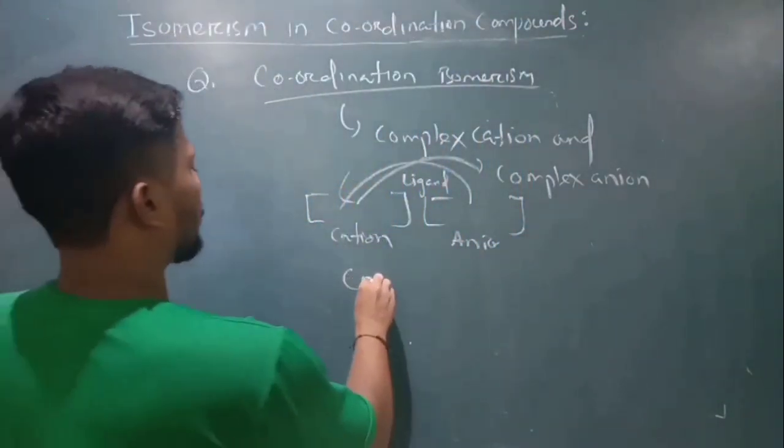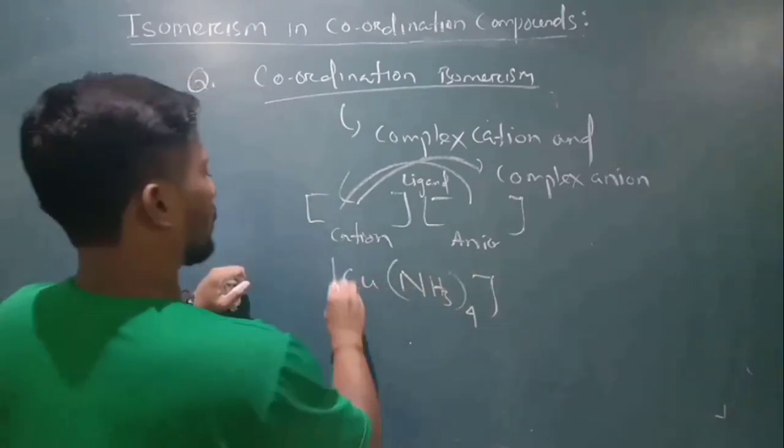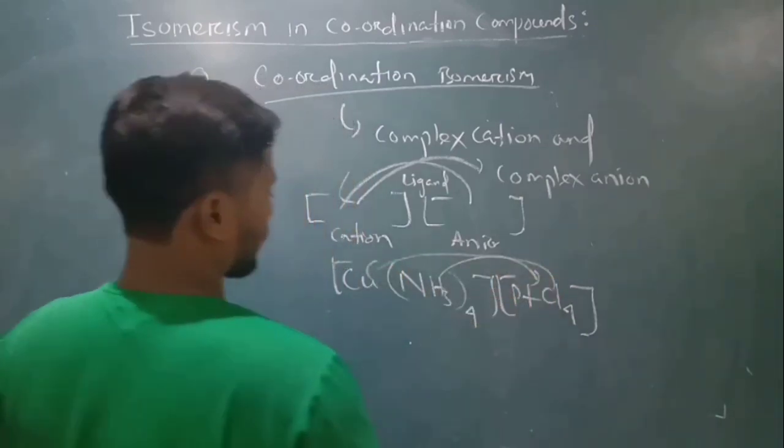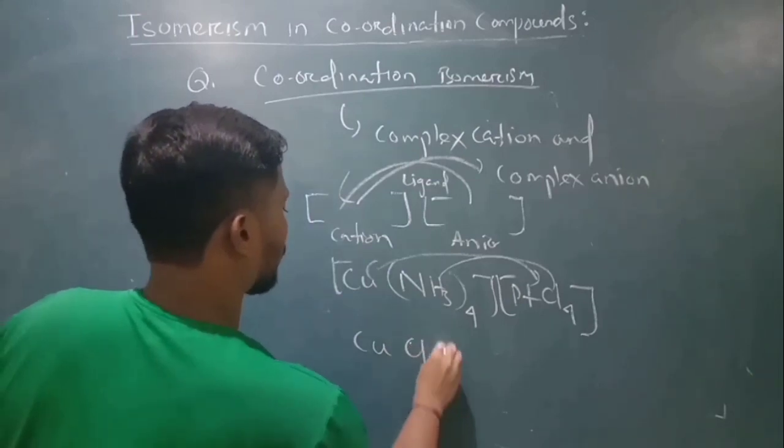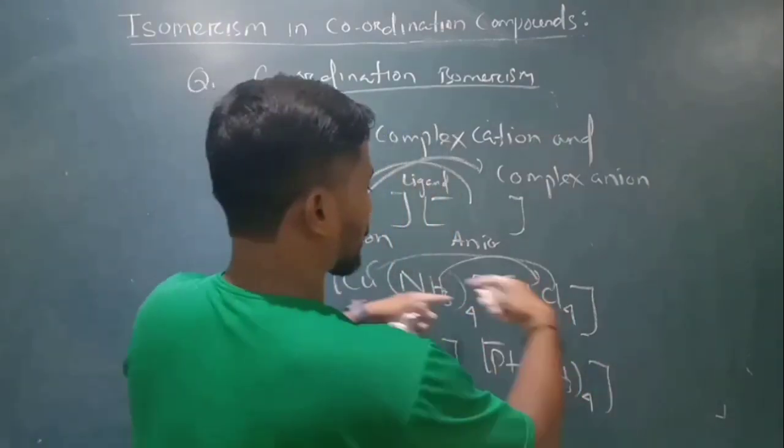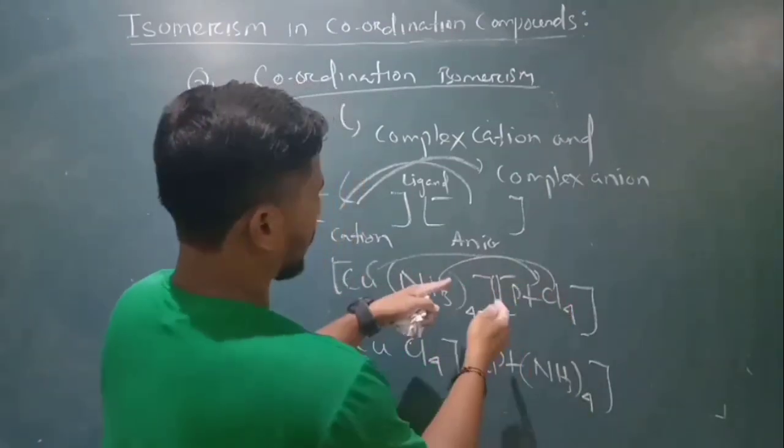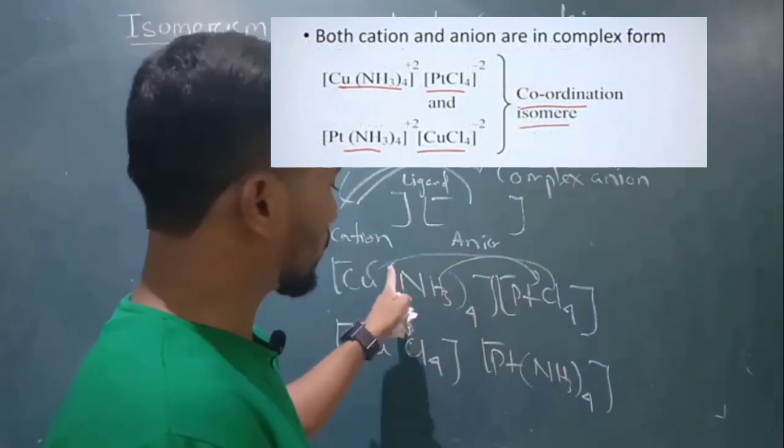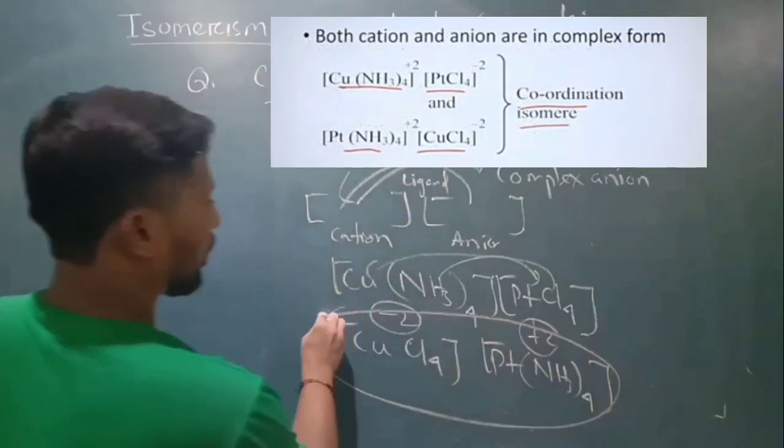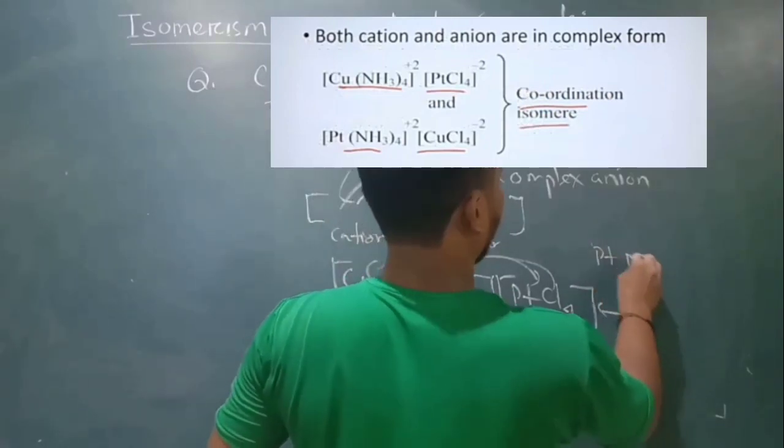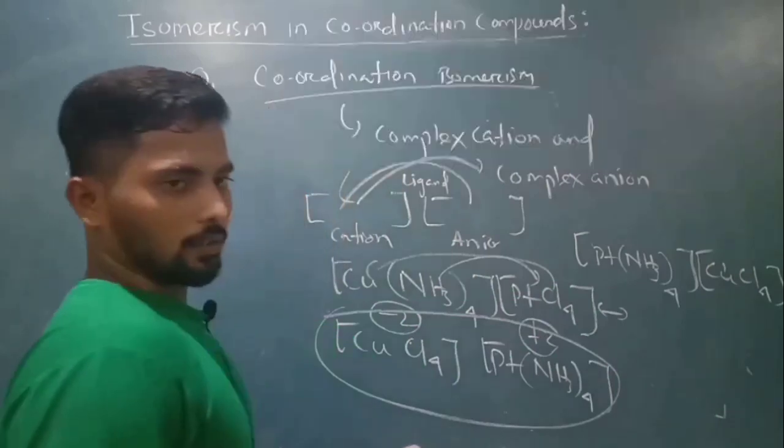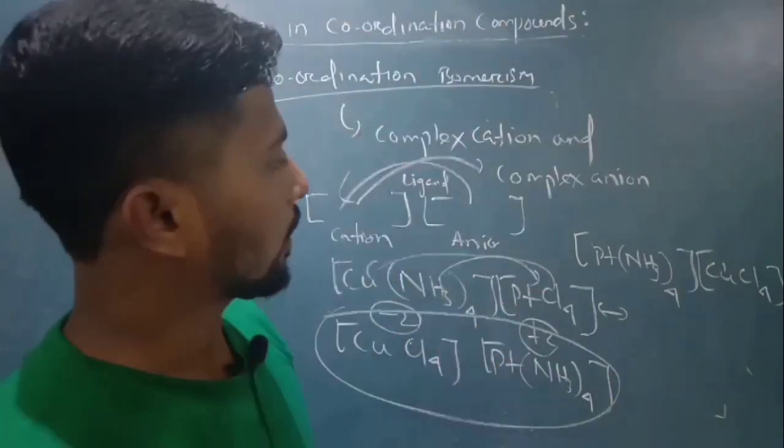For example, Cu(NH3)4[Pt(Cl)4]. When you exchange the chlorine with NH3 between Cu and Pt, you get [Pt(NH3)4][Cu(Cl)4]. The ligands exchange from one metal to another metal between coordination spheres.